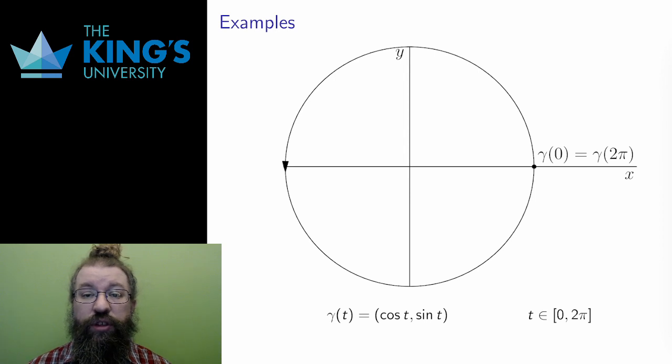First example is the circle. The curve gamma(t) = (cos t, sin t) traces out a circle. At time 0, cosine of 0 is 1, and sine of 0 is 0, so the output is the coordinate (1, 0).